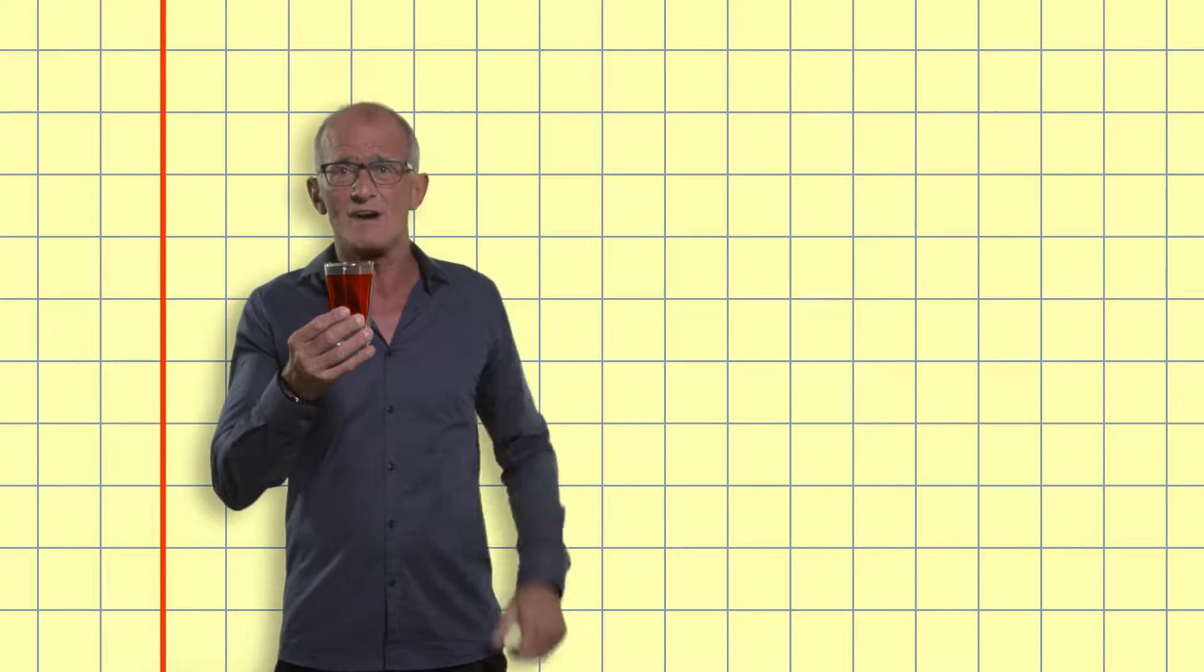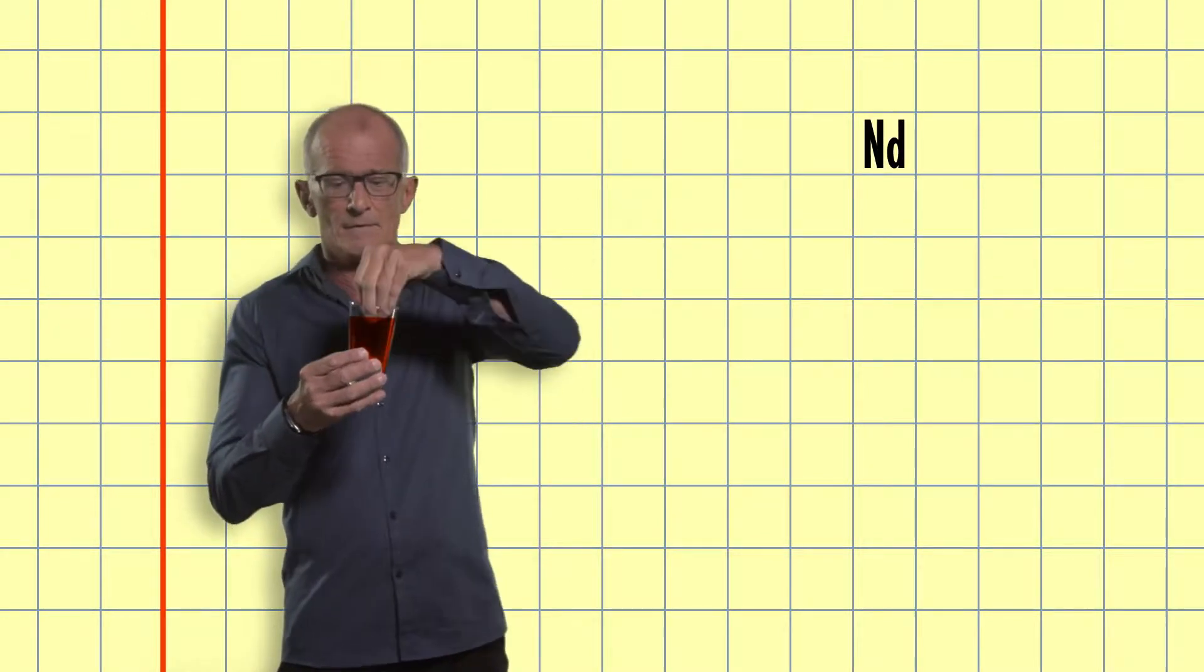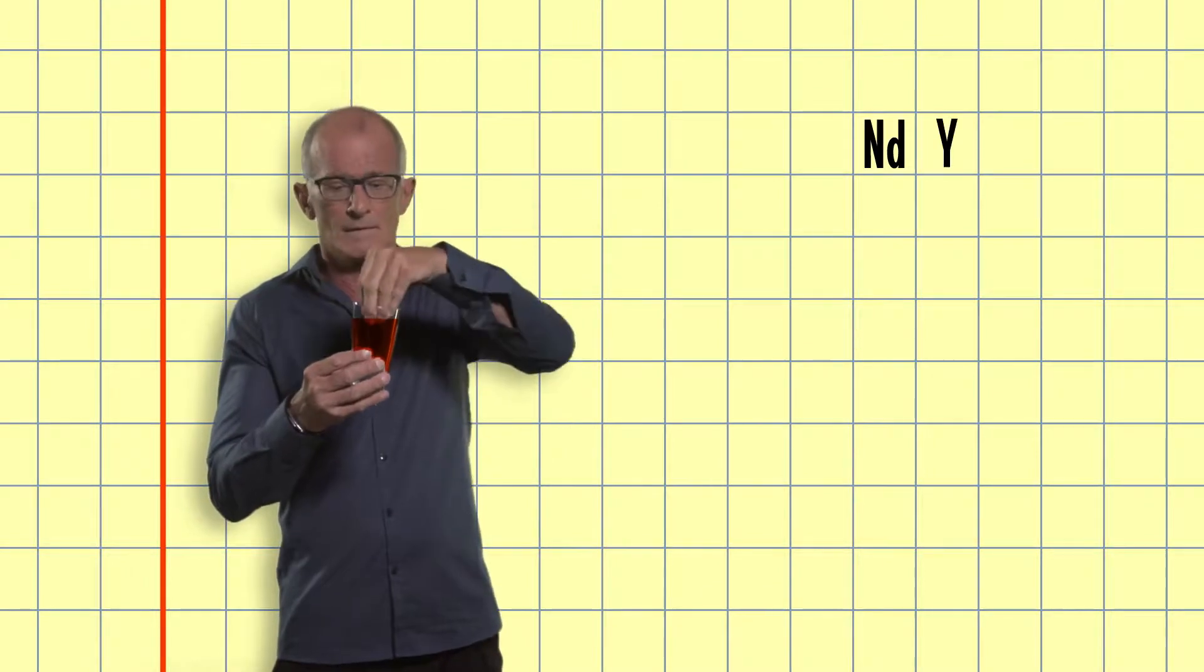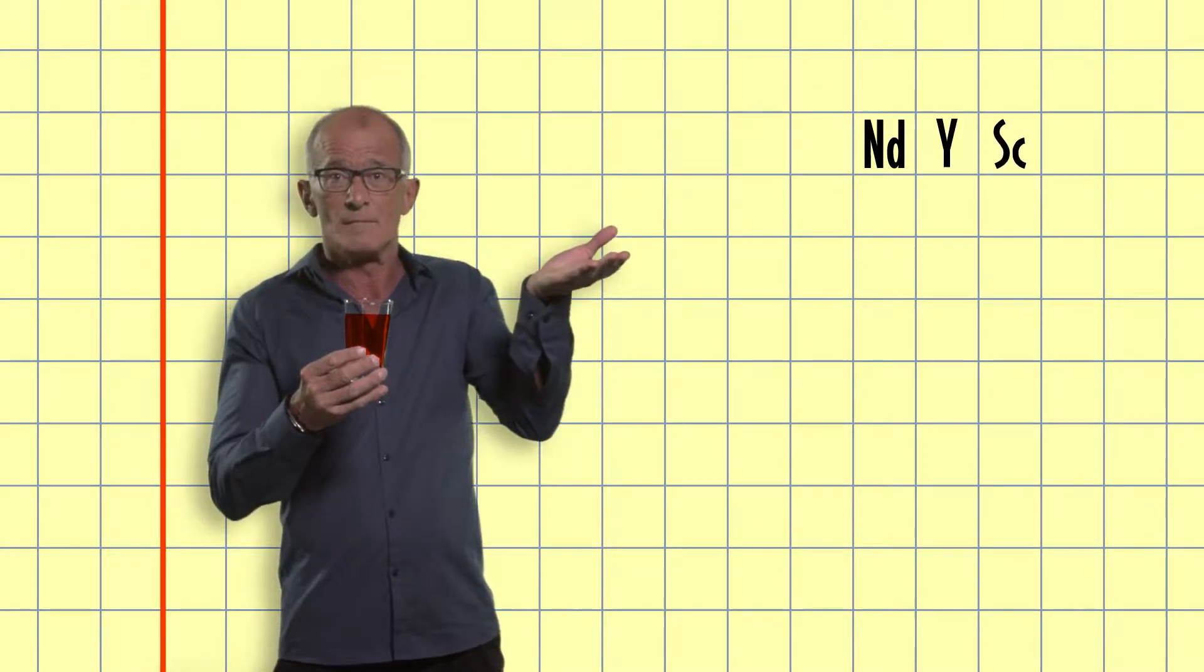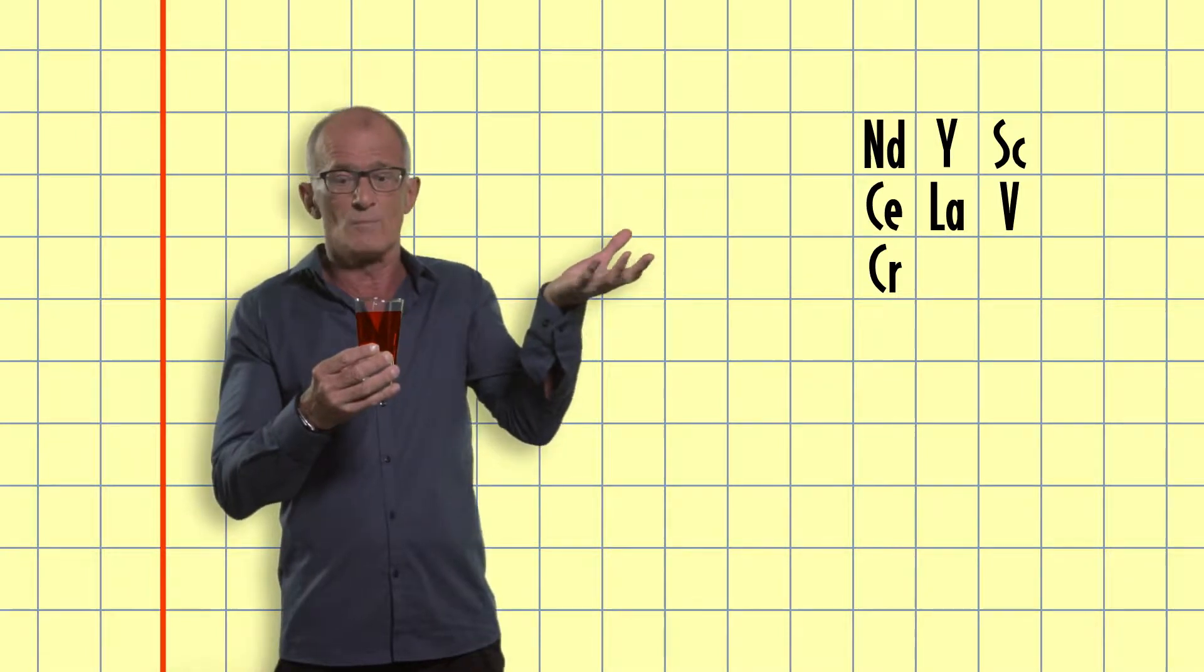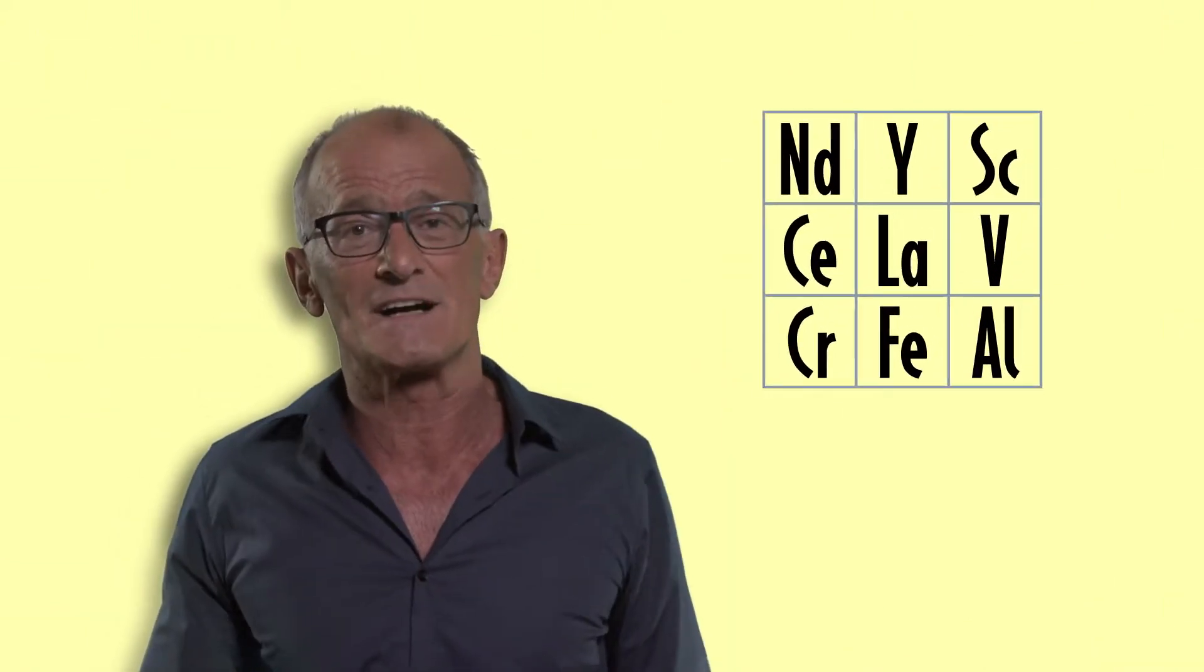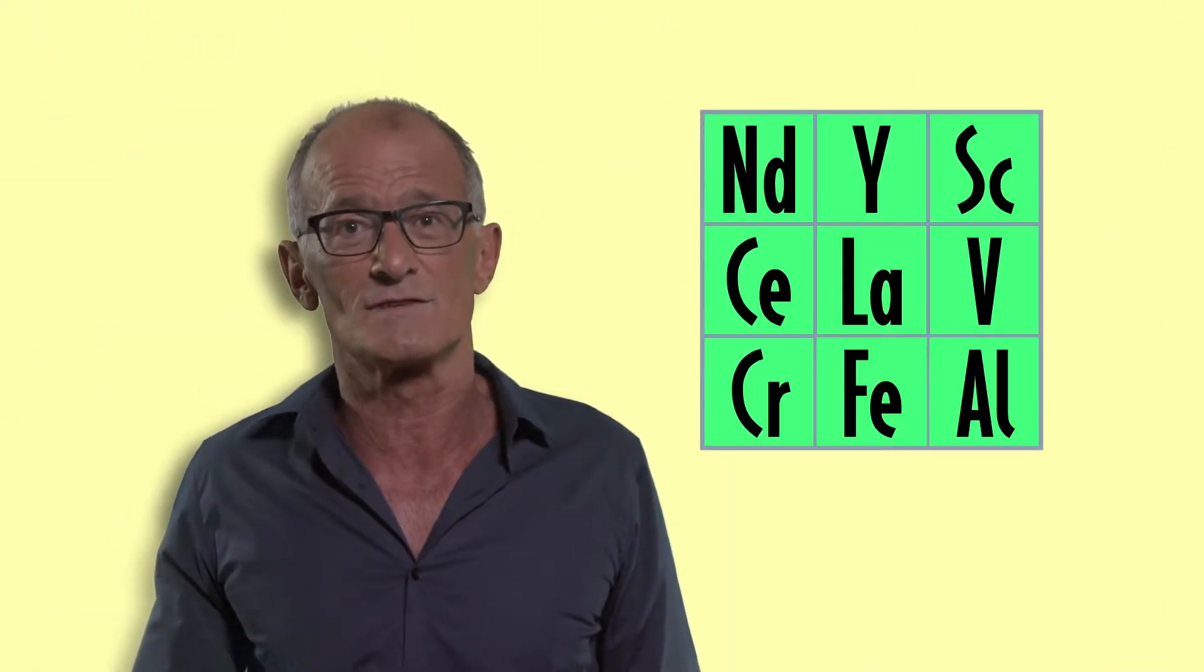In this glass really rare earth metals like neodymium, yttrium, scandium, a whole host of other scarce metals as well as the old boys iron and aluminium. Together, these elements are key to the clean technologies of tomorrow.